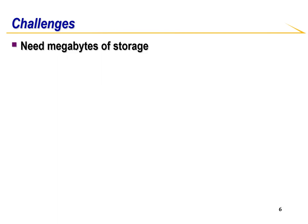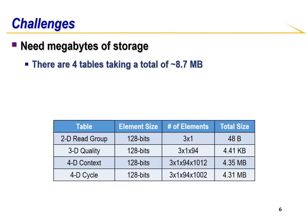There are challenges in accelerating BQSR. The first is that the four tables combined take a large amount of storage. Having one copy of the four tables requires roughly 8.7 megabytes, which would already consume all of the BRAM on an FPGA.